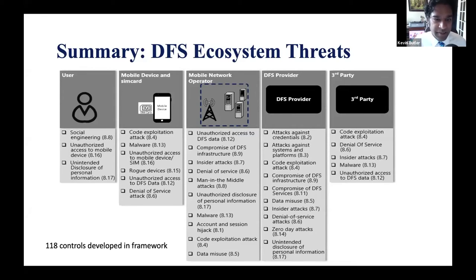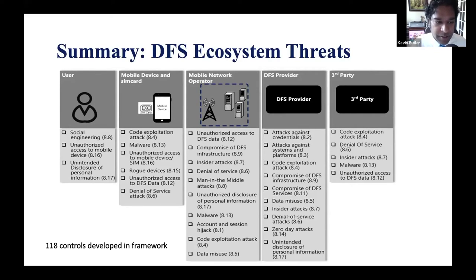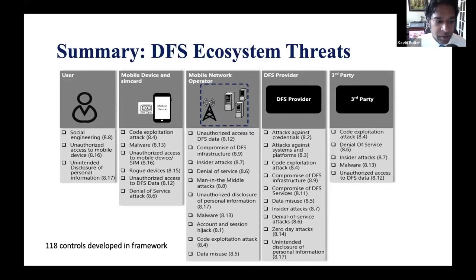In summary, the threats to the ecosystem — we've identified 17 different threats. We've examined these threats as they apply to various stakeholders within the DFS ecosystem: from the user through the device, through the MNO, the DFS provider, and third parties. We've developed 118 different controls that can be used as a means of mitigating and addressing the threats. Let me talk about an example threat: denial of service, or DoS, mentioned in section 8.7 of the document. Denial of service attacks can be characterized as attacks designed to prevent services within the DFS ecosystem from being offered.